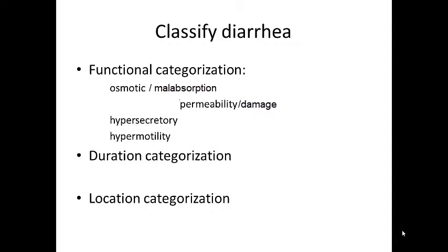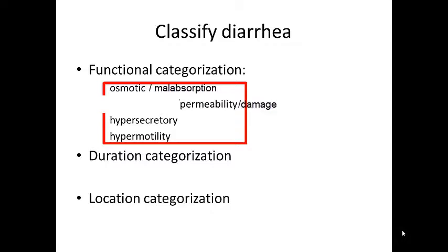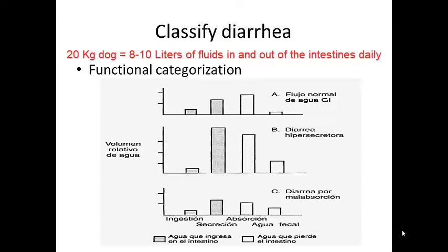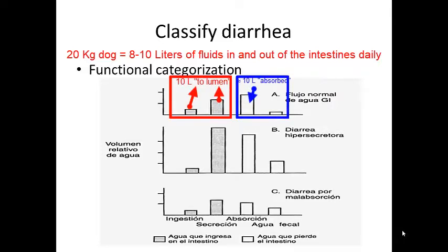If we talk about functional categorization, this is not routinely done but can be very helpful in determining the cause and treatment. Diarrhea can arise from an osmotic effect — things that retain water in the intestines — or from an alteration in the permeability of the intestinal mucosa when there is damage or inflammation, or it could be hypersecretory, or due to increased motility. To illustrate this, in a 20-kilogram dog there is between 8 to 10 liters of fluid going in and out of the intestines every day, and usually by the end the fluxes are almost equal with no net loss or gain of water.